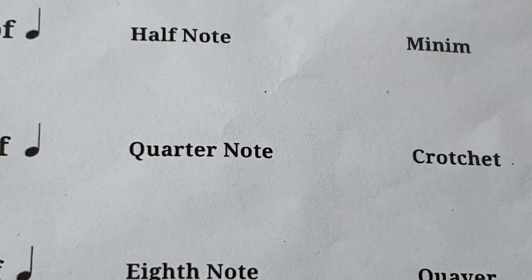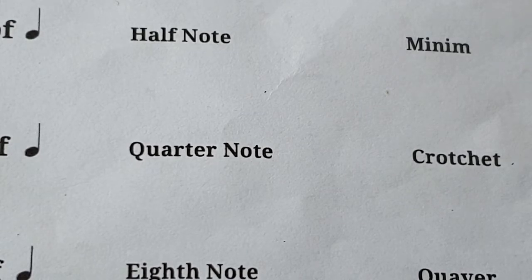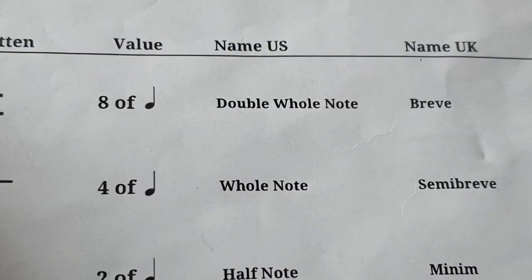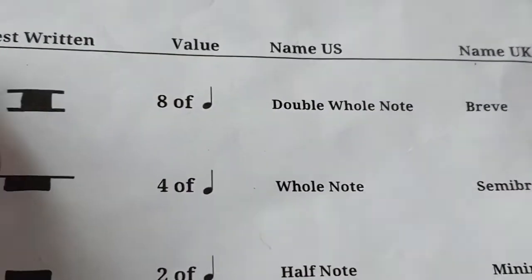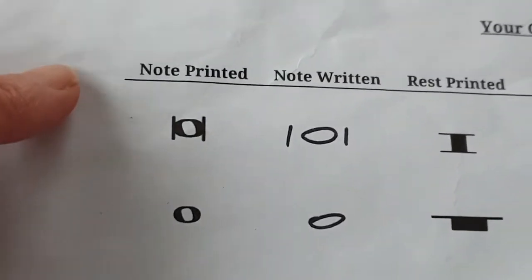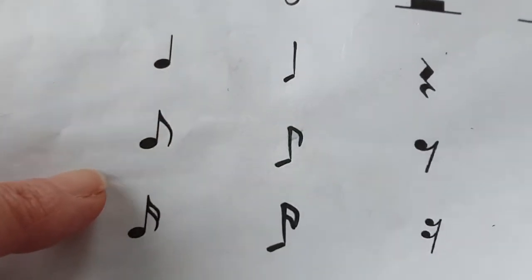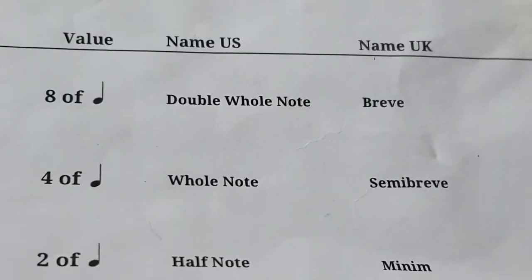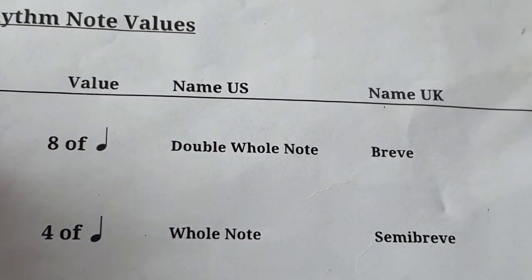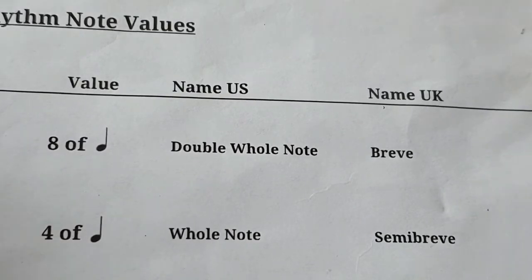Today we're talking about the names in English for music note values — that is, music rhythm durations: how long a note is. There are actually two systems used in the English language, and there are only eight note values, from the longest to the shortest.